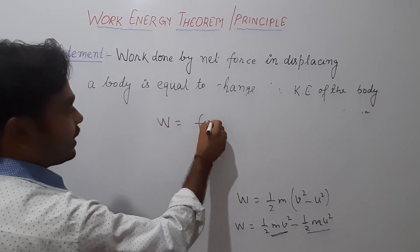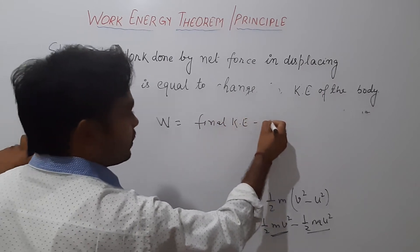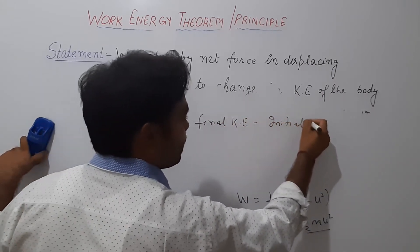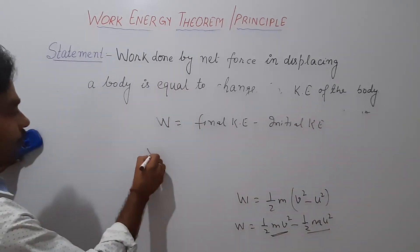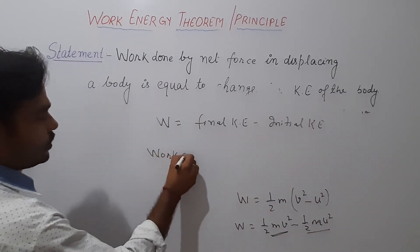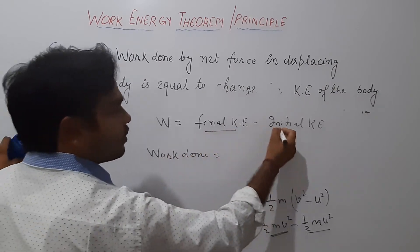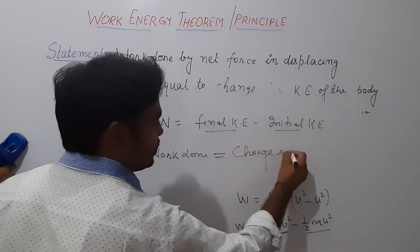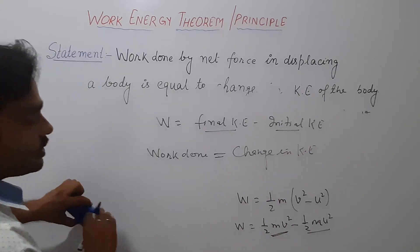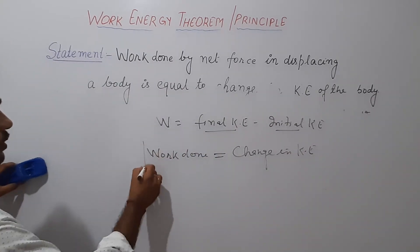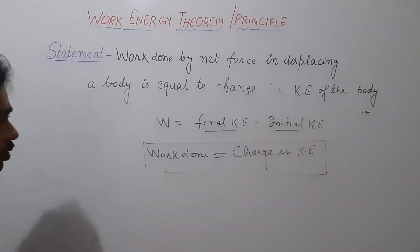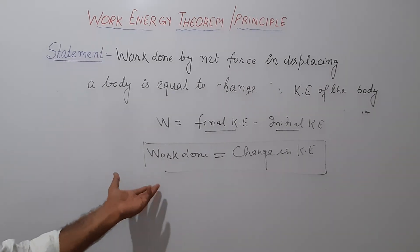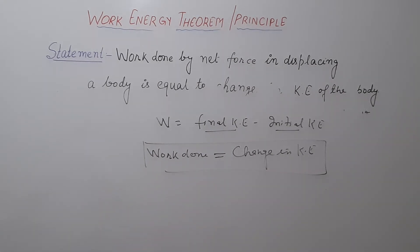So (1/2)MV² is the final kinetic energy and (1/2)MU² is the initial kinetic energy. We can write this result as: work done equals final kinetic energy minus initial kinetic energy. Work done equals change in kinetic energy, and final minus initial is equal to change in kinetic energy. This was the statement of the work-energy theorem. According to the work-energy theorem, work done on a body is stored in the form of energy, or we can say that work done is equal to change in kinetic energy of the body. Work and energy are equal.